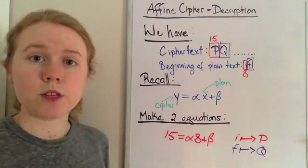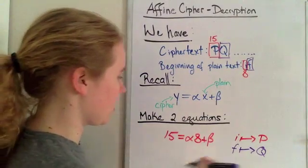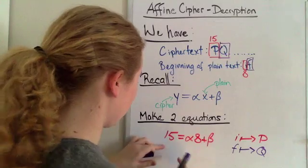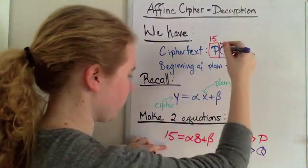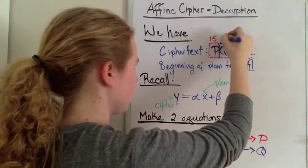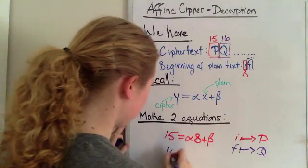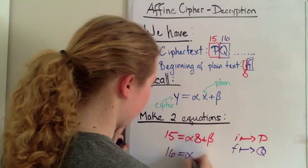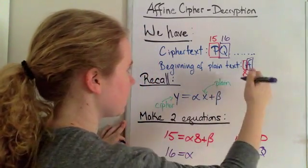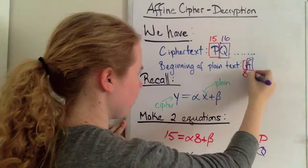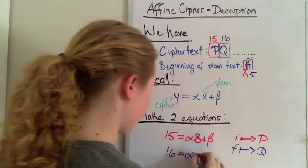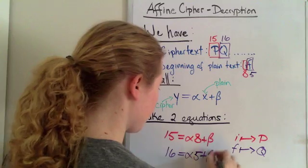So we can do the same process where we say, okay, the y, which is the cipher, Q is the sixteenth letter. So we say 16 equals alpha times 5 plus beta.